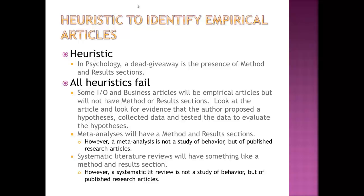Heuristics don't work in every situation. If you go through the article and see section headings for Methods and Results, that most likely indicates an empirical article — but not always. Some IO psych and business research articles will be empirical but will not have a methods or results section. So you have to look carefully at the article for evidence that the author proposed a hypothesis, collected data, and tested the data to evaluate the hypothesis.